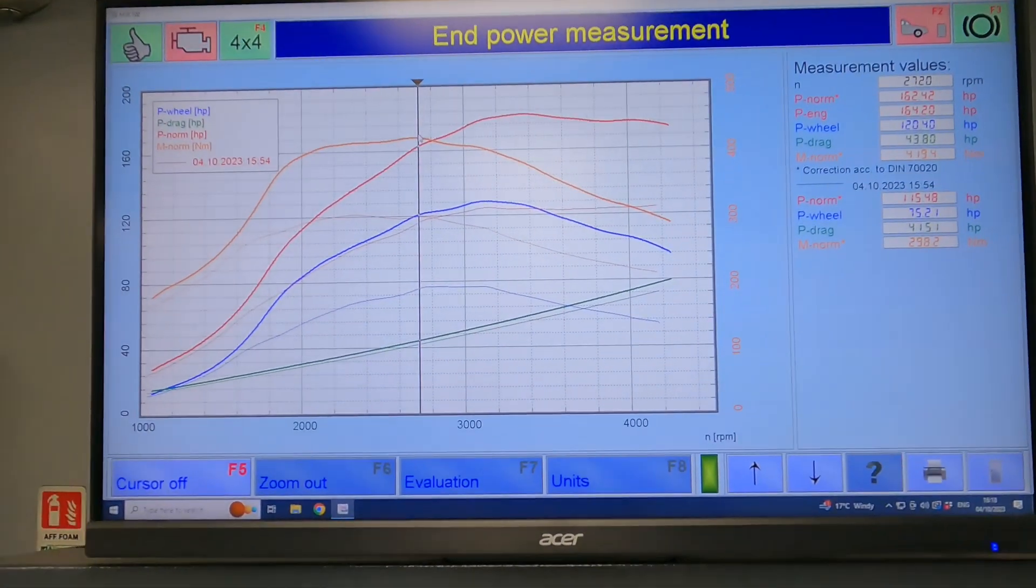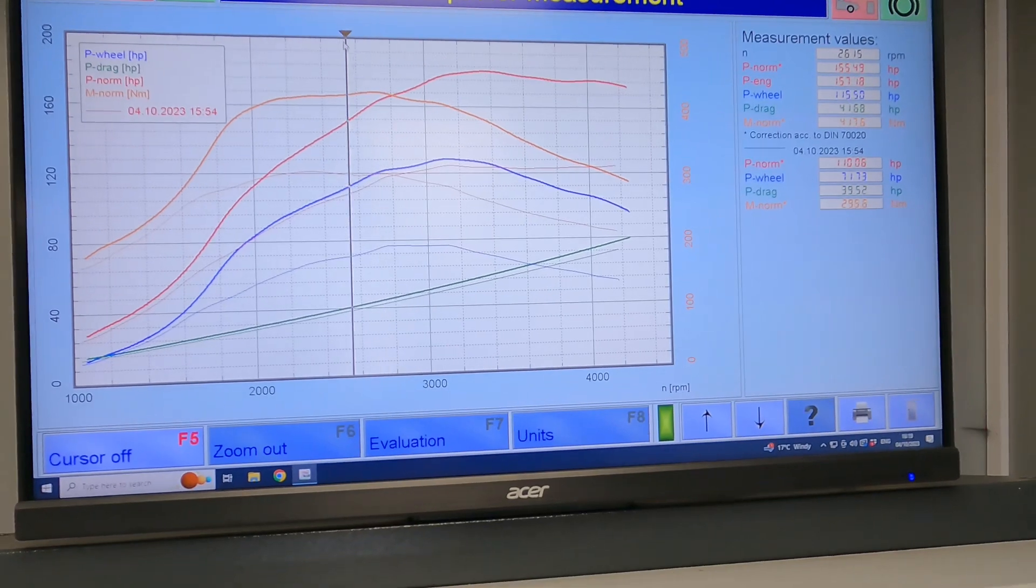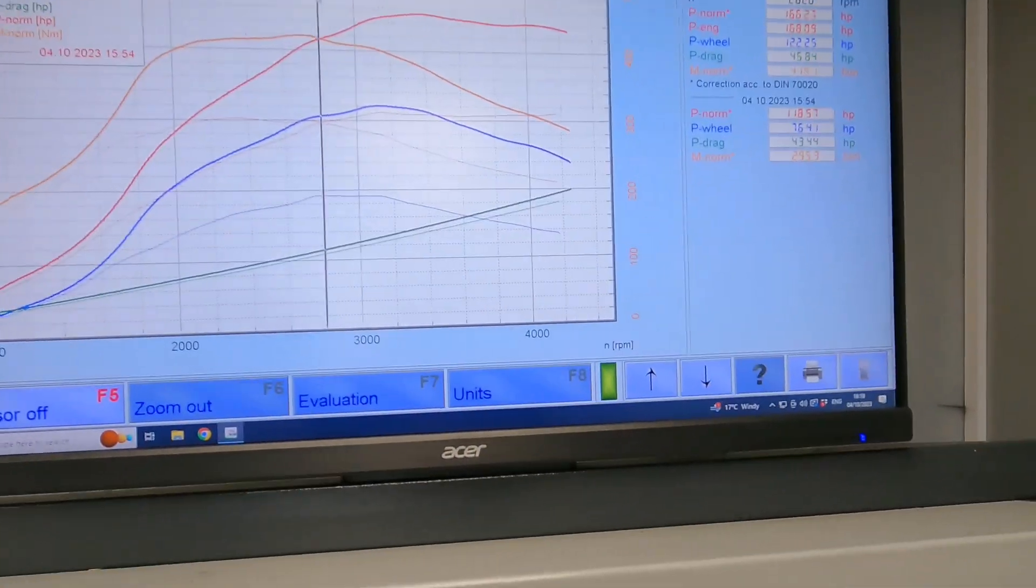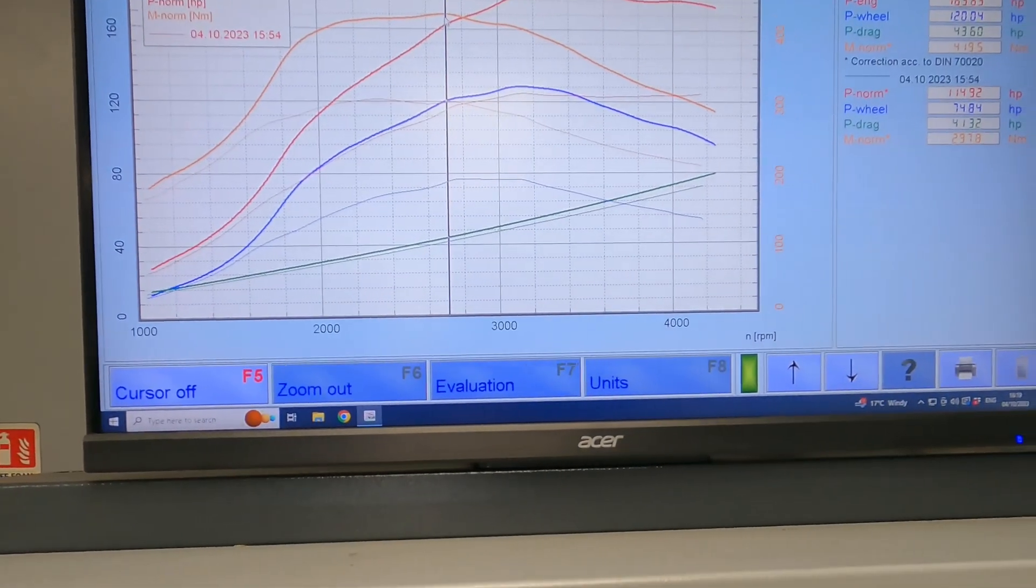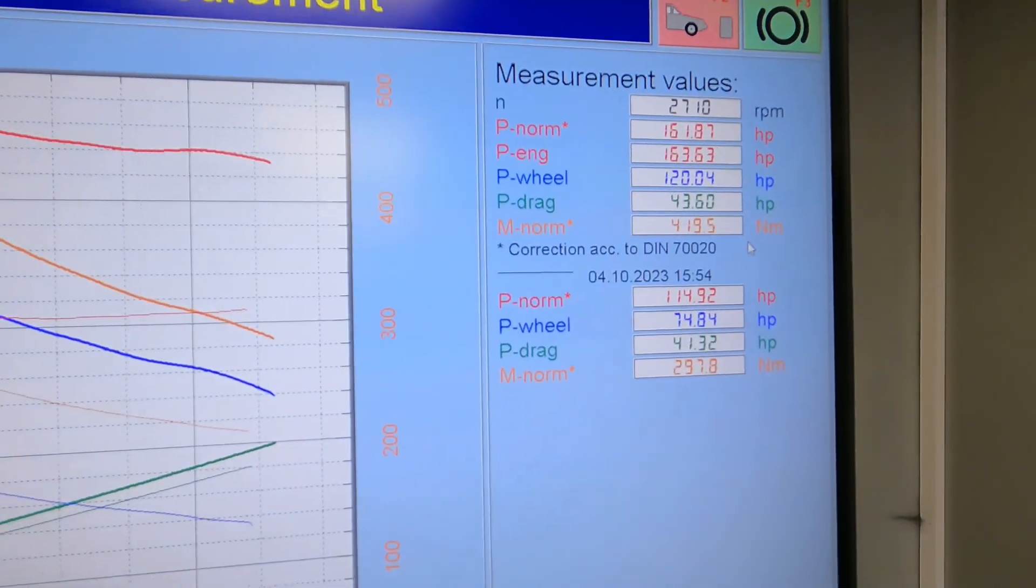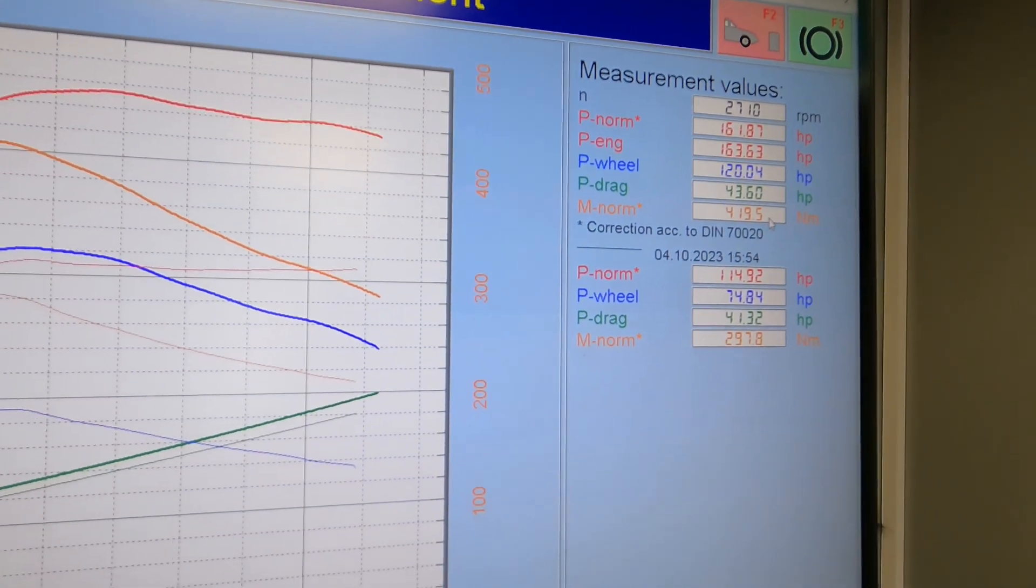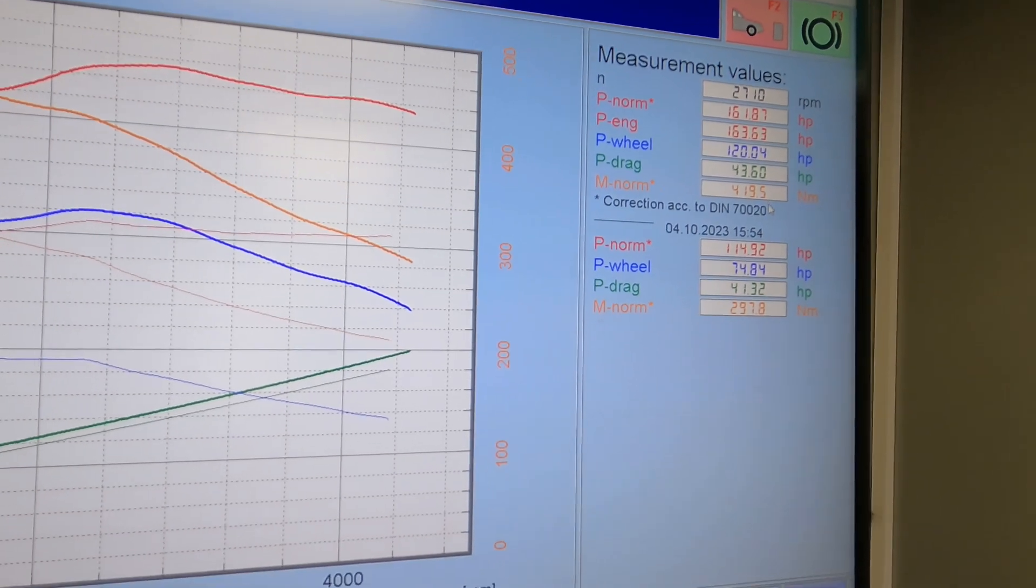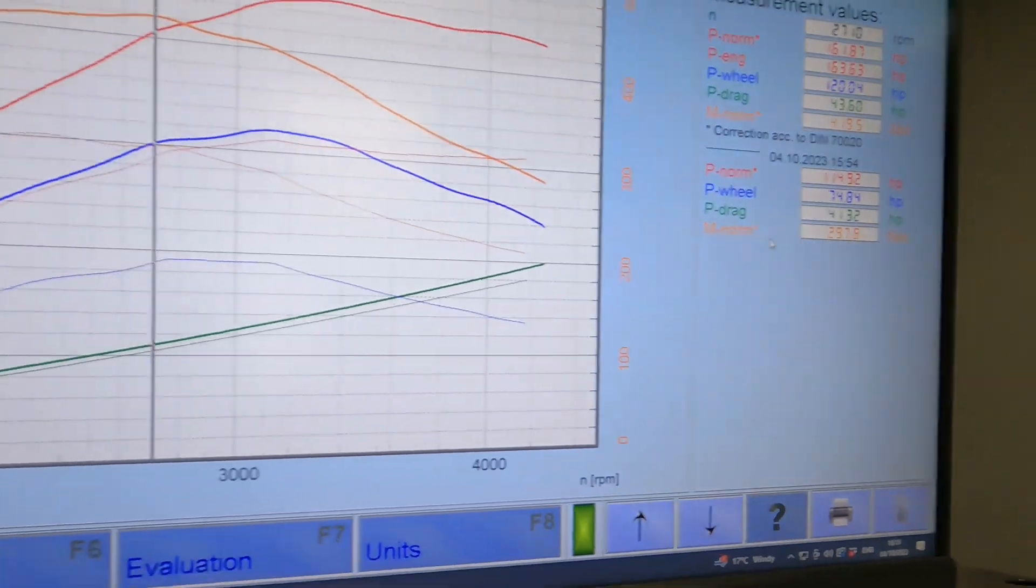So what we're looking at here on the graph, I've got a little cursor. Essentially I can just drag it across. And let's pick this value here. So we're looking at the peak value of torque, and we made 419 Newtons with the stage 2 mapping, and as standard at that point, just under 300 Newtons.